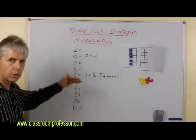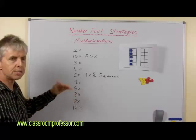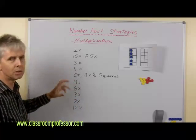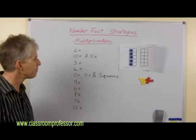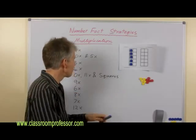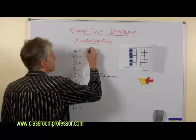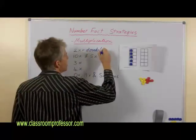Alright, so let's begin. And this order, this list of strategies is in order of difficulty. There could be some debate in the middle, but this is a recommended sequence. Starting with two times, the two times strategy is simply doubles.